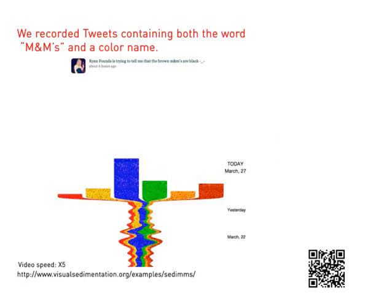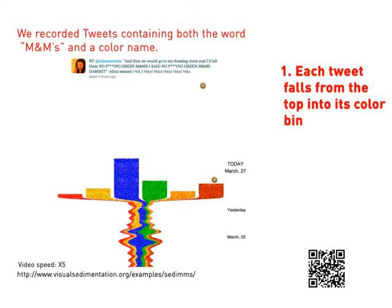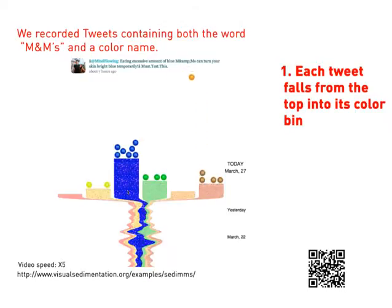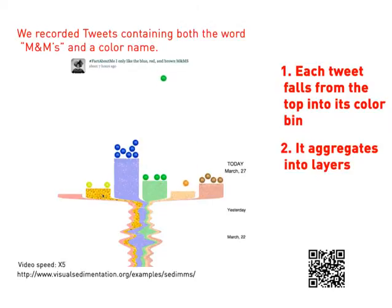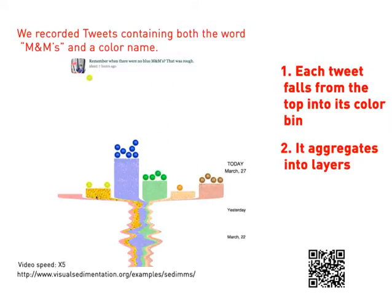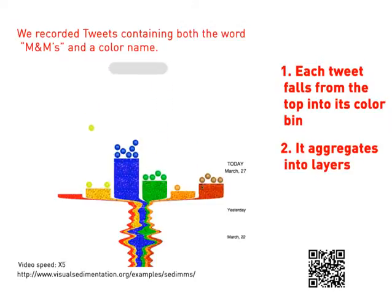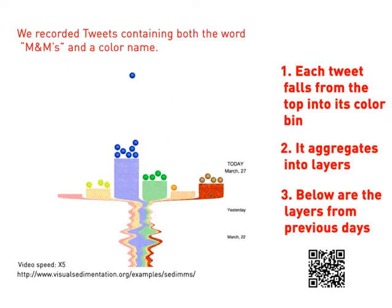Seti M&Ms is a record of 20,000 tweets containing both the word M&Ms and a color name. Each tweet falls down from the top into the appropriate colored bin, aggregates into layers, and layers from previous days are at the bottom.